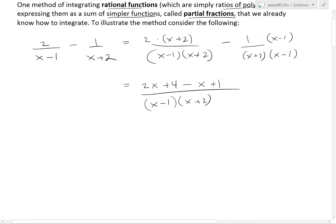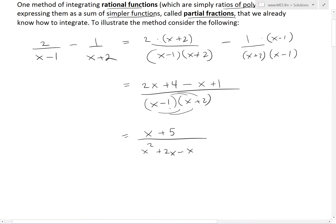So we get 2, just multiply this out, 2x plus 4 minus, right here, x minus, this is going to be plus 1, all divided by x minus 1, x plus 2, that's the common denominator. Now add these up and expand this by multiplying this out, we get basically, right here, 2x minus x, that's just going to be x. 4 plus 1 is 5, divided by, now we have an x squared, x squared, now it's going to be a 2x plus 2x, that's going to be a minus x.